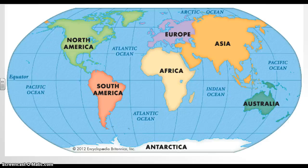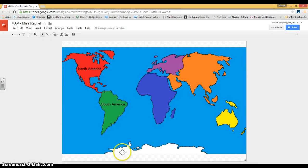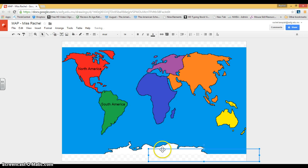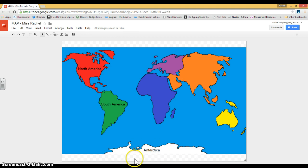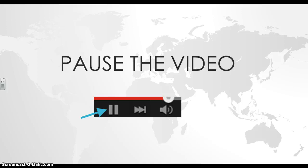The next continent we're going to type is Antarctica. This is the continent that is on the bottom of the Earth. On my map, it's right down here, and I left it white because there's lots of snow there. I'm going to do the same — I'm going to click one time on the T, and then I'm going to click one time on Antarctica, and start to type capital A. I can move it so that I can see the dot of the I, and click out. If you made yours white like Miss Rachel did, make sure that your words don't go into the bottom part. Go ahead, pause the video, and type Antarctica.